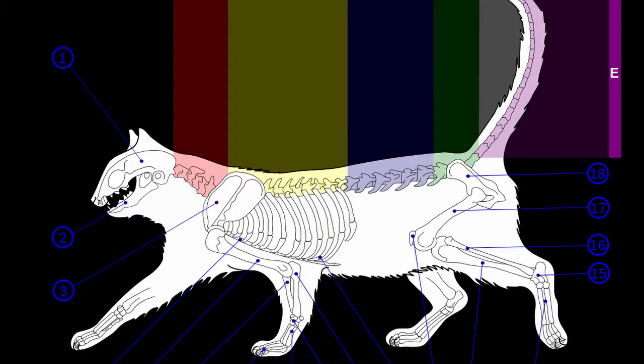The cat has all five regions of the vertebrae. It has seven cervical vertebrae, 13 thoracic, 7 lumbar, 3 sacral, and a variable amount of caudal vertebrae depending on how long or short its tail is.